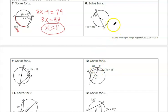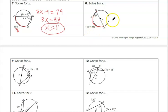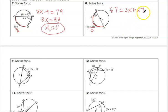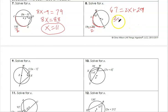In number 8, we have an angle of 67 degrees and an arc of 4X plus 58. The angle is half the arc, so 67 equals half of (4X plus 58), giving us 67 equals 2X plus 29. Subtracting 29 from both sides gives 38 equals 2X, and dividing by 2, X is 19.